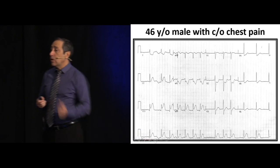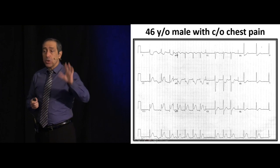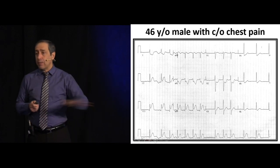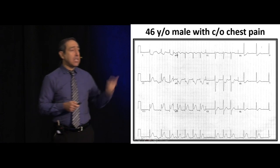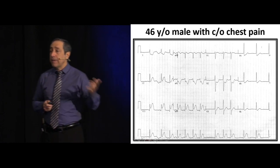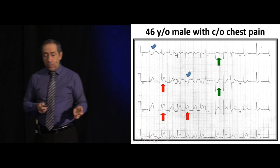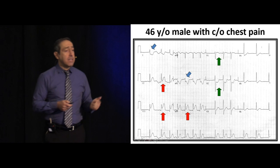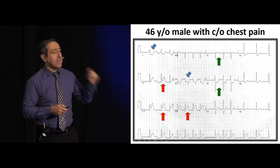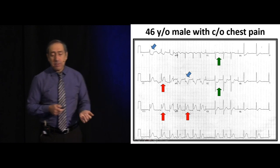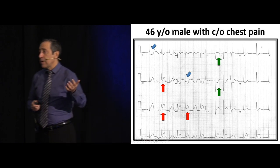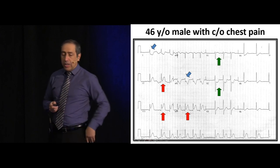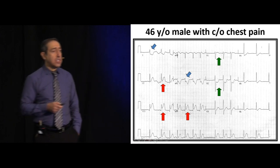Another way to look for right ventricular involvement is on the first EKG you obtained without changing anything. Look at lead V1: if you have ST elevation in V1, that's an indication that the right ventricle is also involved. For posterior MI, what you're looking for is a tall R wave and ST depression in lead V2. Sometimes it extends to V1 or V3, but the key finding is tall R wave and ST depression in V2.